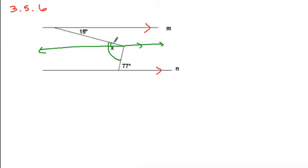We can use the properties of the transversal of parallel lines. If we think of this as the transversal, this angle of 77 and its alternate interior angle will be equal. So we know that the lower part of the whole angle x is going to be 77 degrees.